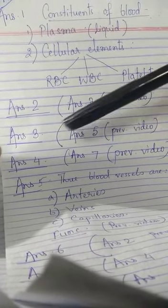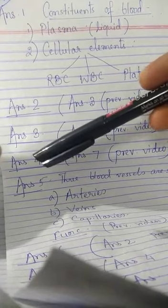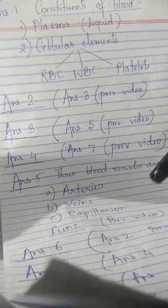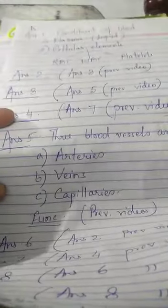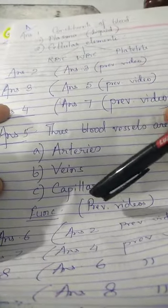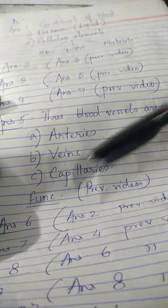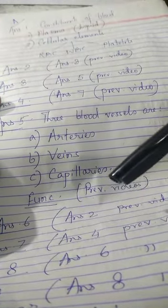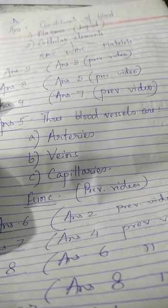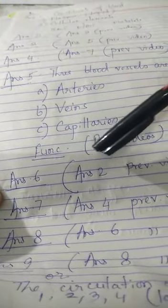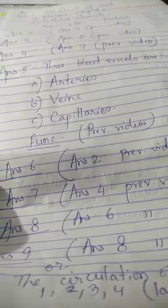Now move to question number five. The answer is: name the three blood vessels and their functions. So the three blood vessels are arteries, veins and capillaries. The function of each one of them has been discussed in the previous video. Answer number six is the same as answer number two which I have discussed in the previous video.